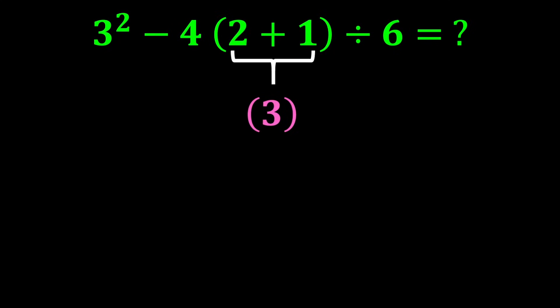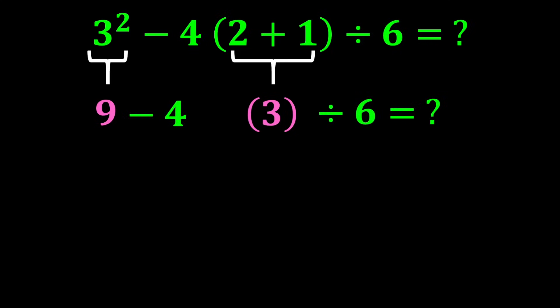According to PEMDAS, we must first calculate the parentheses, so 1 plus 2 gives us 3. After the parentheses, we must calculate the exponent, so 3 to the power of 2 gives us 9. The expression then becomes 9 minus 4 times 3 divided by 6.